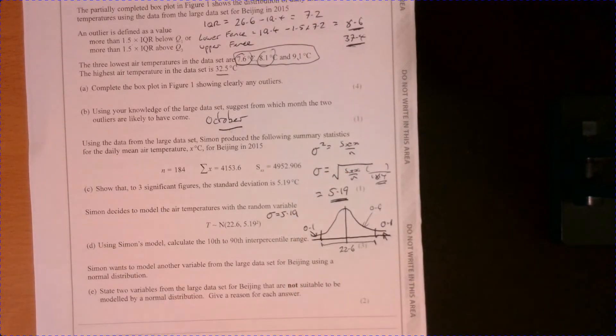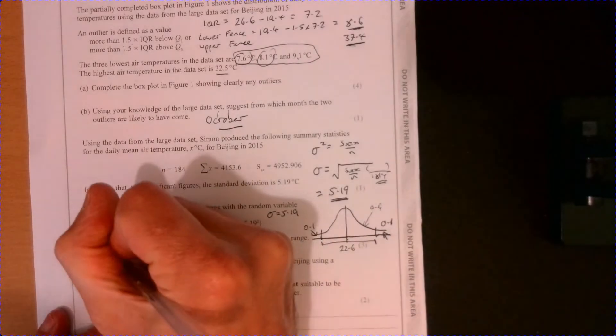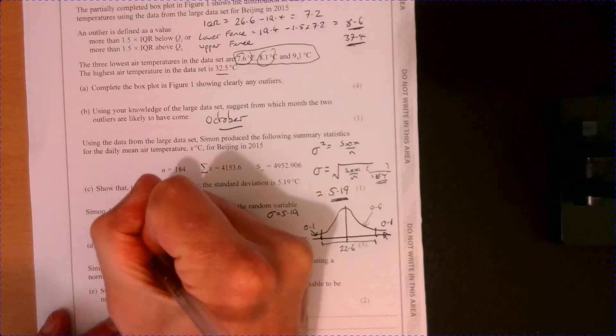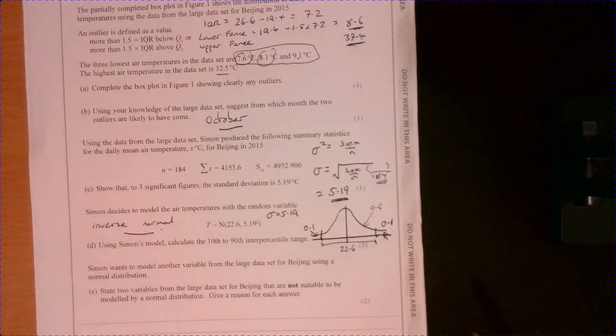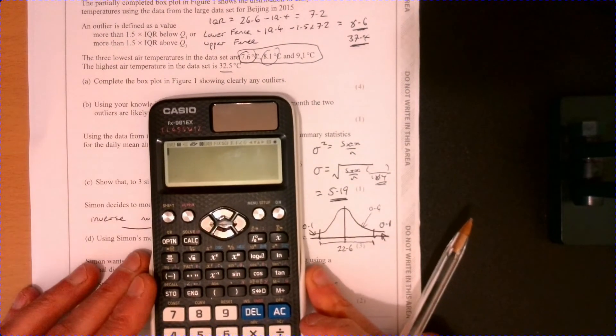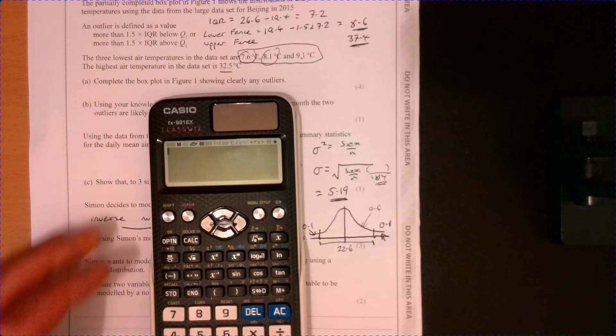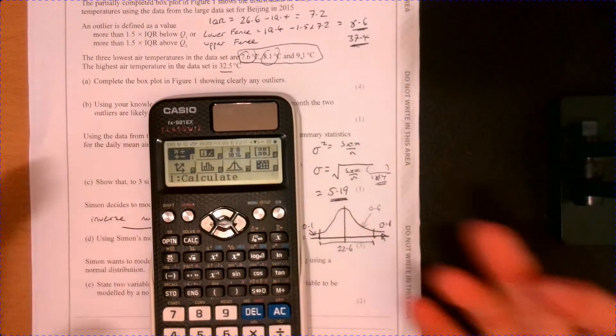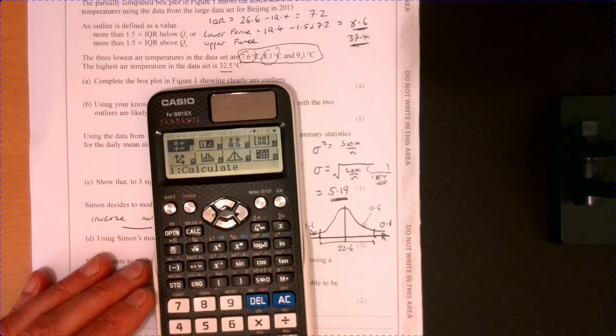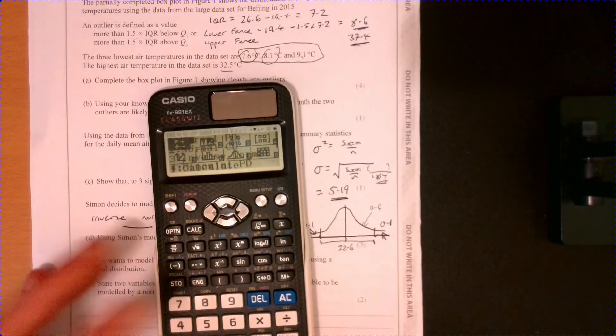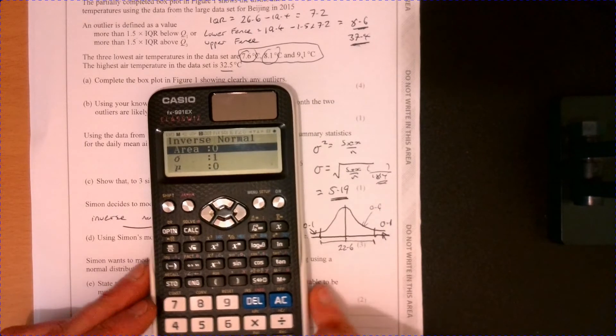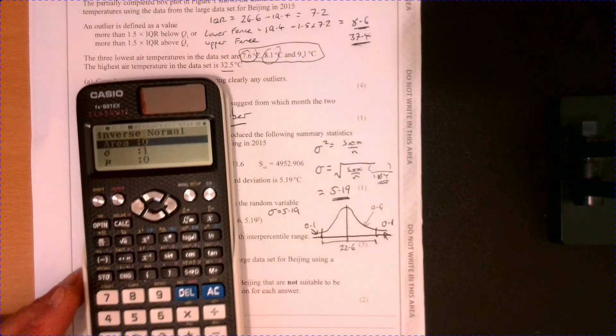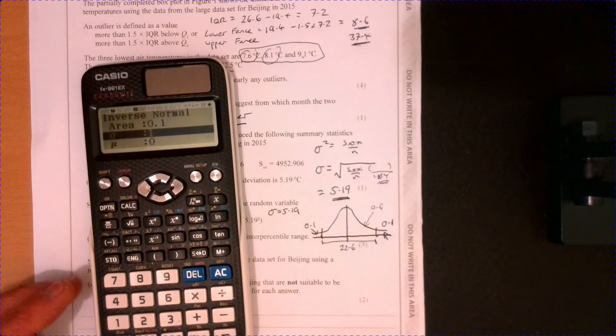Now, all we need to do here is that we can just use, on our calculator, we can use just the inverse normal. It used to be a lot harder to do this years ago when you used to have to use all the tables, but you can actually just go through and just use your calculator. So if we just go through the setup there, so we're going to pick number seven. You can see a little normal curve. And number three, inverse normal. And now I'm going to work out this lower point down here. So you can just put in 0.1, and